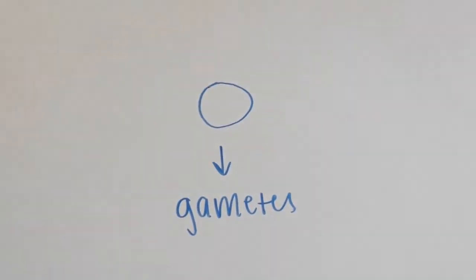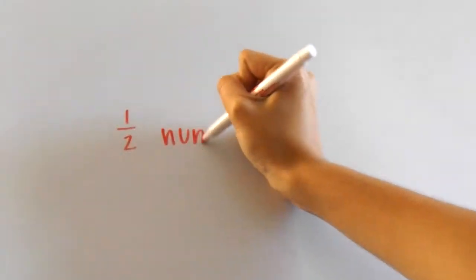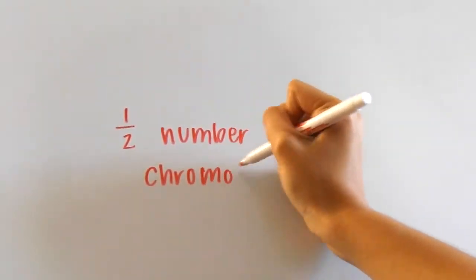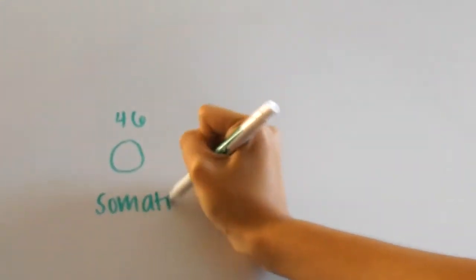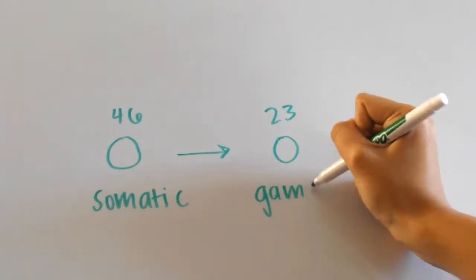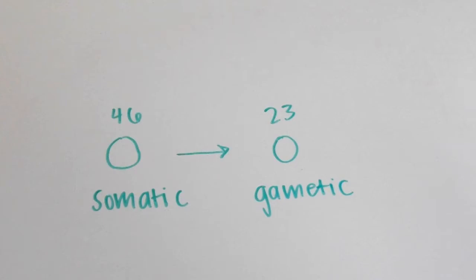Meiosis is when cells divide to form gametes, which are the sperm and egg in humans and have only half the number of chromosomes. For example, in us humans, we all have 46 chromosomes in each somatic cell in our bodies, but for gametic cells, there are only 23 chromosomes.